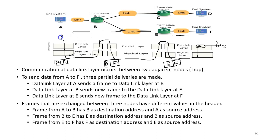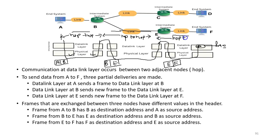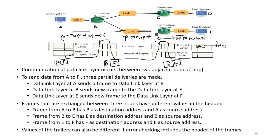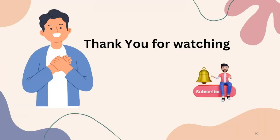Communication between two adjacent nodes is known as hop-to-hop communication — between A and B, between B and E, and between E and F — which is also called node-to-node communication. The values of the trailers can also be different if error checking includes the header of the frames. In the next video lecture we will see the physical layer. Thank you for watching, stay connected for more such videos.